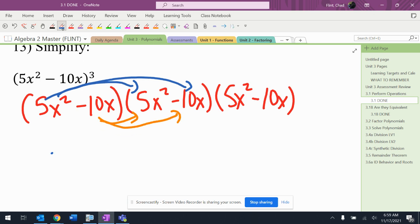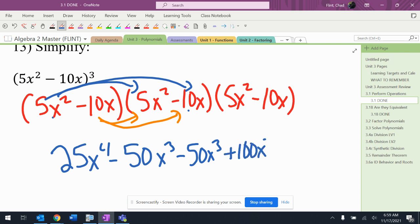So 5x squared times 5x squared is 25x to the fourth. 5x squared times negative 10x is negative, not 10, negative 50x to the third. Negative 10 times 5x squared, negative 50x to the third. Negative 10x times negative 10x, positive 100x squared.